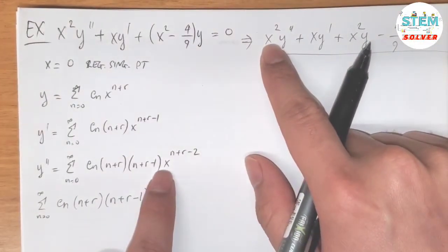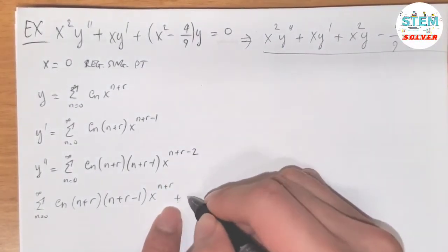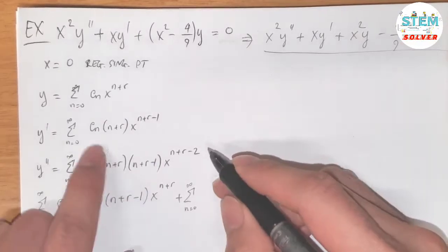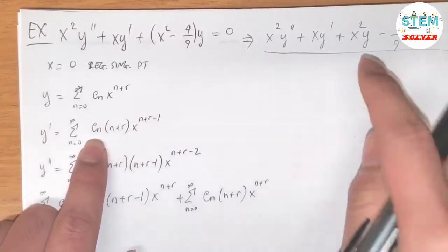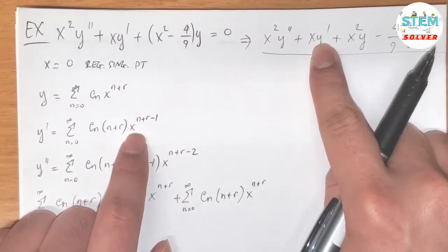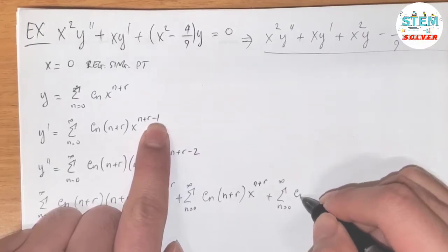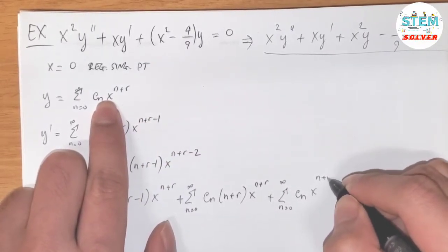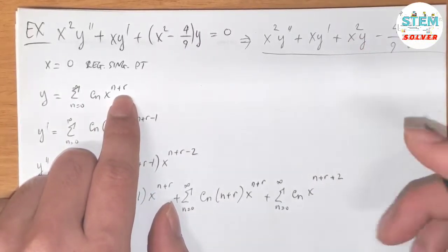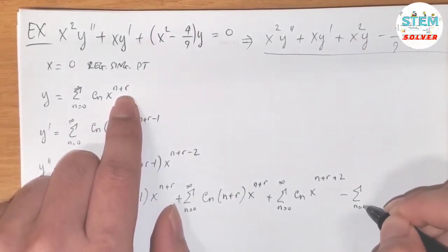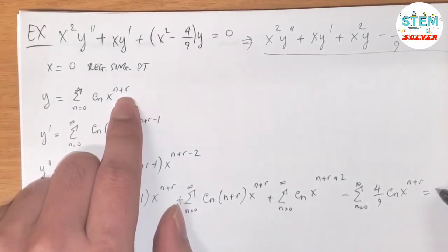For x times x to the n+r−2, the exponents give n+r. Plus the power series from 0 to infinity of cn(n+r) x to the n+r — since x times x to the n+r−1 gives n+r. Plus the power series from 0 to infinity of cn x to the n+r+1. Minus the power series from 0 to infinity of (4/9)cn x to the n+r equals 0.